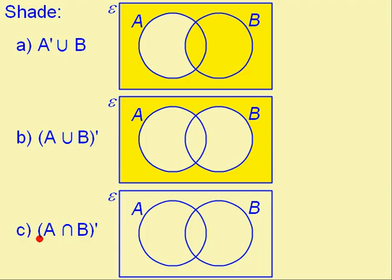For C, we want the complement of A intersect B. So, that's everything that's outside the intersection of A and B. So, this is the answer for that one.